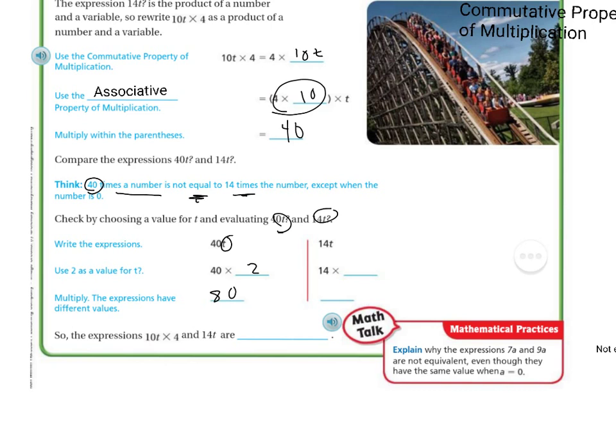And then if I do the same thing over here, I use the value 2. 14 times 2 is 28. So that is definitely not equal. The expression 10T times 4 is completely different than 14T. So they are not equivalent at all, because 80 is very different than 28.